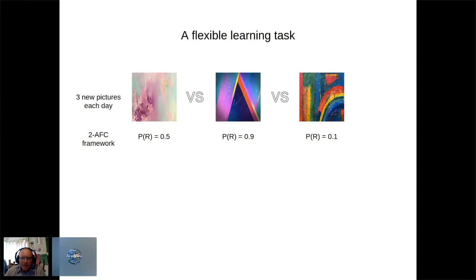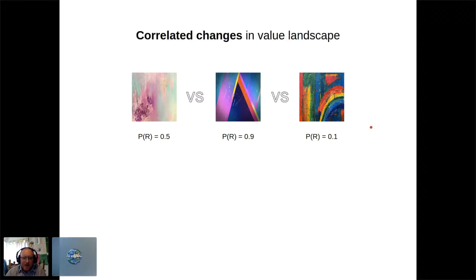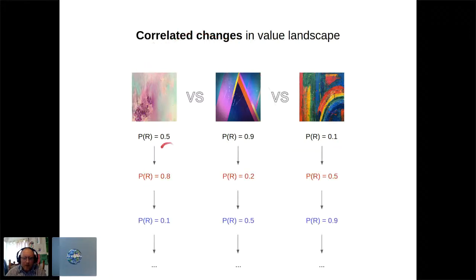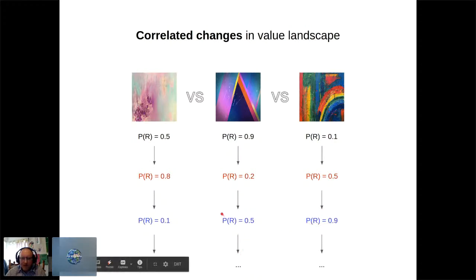Each day, animals are presented with pairwise combinations of three pictures in a two-alternative forced-choice framework. Initial stimulus-outcome associations are arbitrarily assigned; the animal must learn these to a certain proficiency. Once they do, values begin to drift to new levels in a correlated manner. Once the animal learns the new contingency, values drift again — and so on until the animal tires.